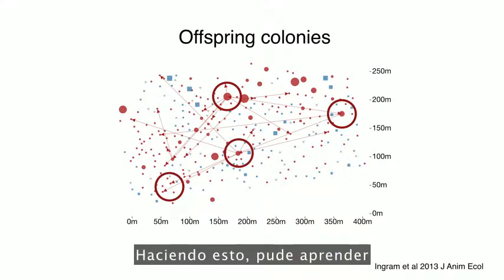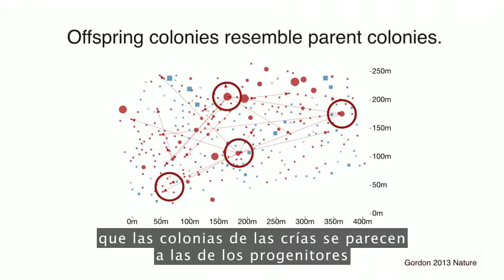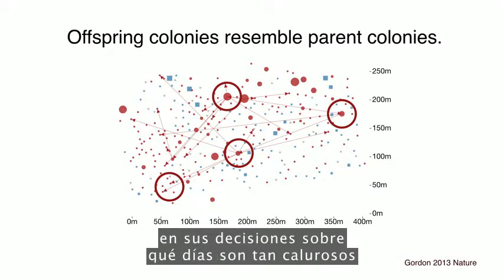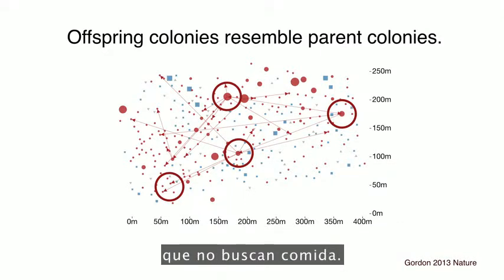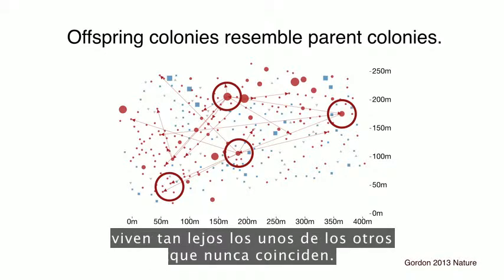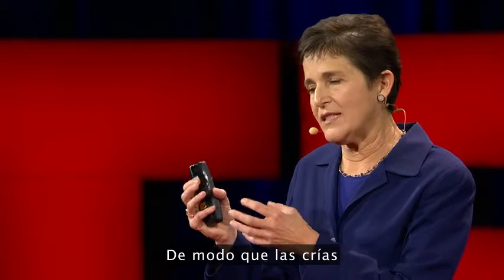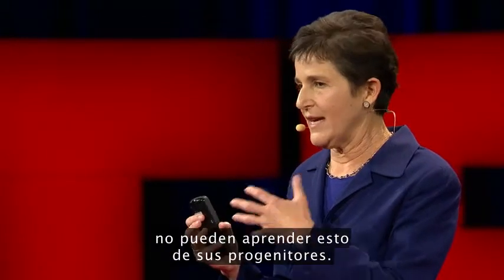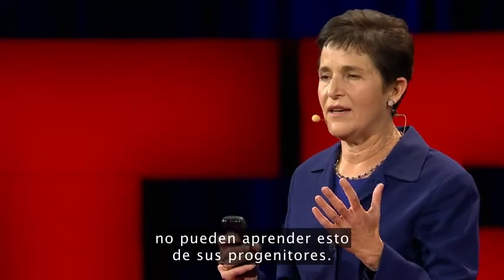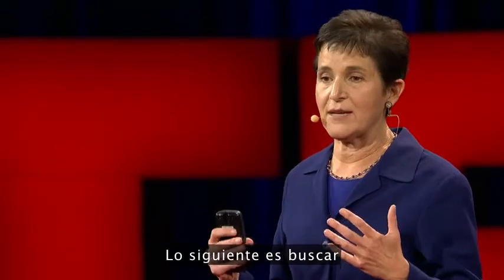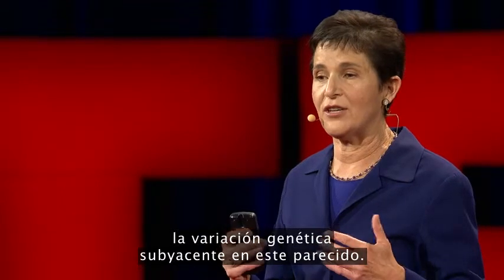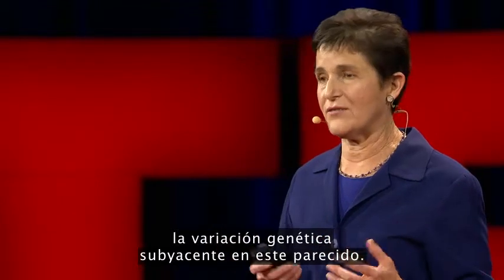By doing this, I was able to learn that offspring colonies resemble parent colonies in their decisions about which days are so hot that they don't forage. The offspring and parent colonies live so far from each other that the ants never meet, so the ants of the offspring colony can't be learning this from the parent colony. Our next step is to look for the genetic variation underlying this resemblance.